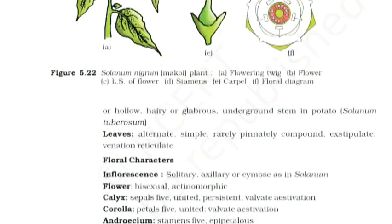Stem is hollow, hairy or glabrous; underground stem in potatoes (Solanum tuberosum). Leaves are alternate, simple, rarely pinnately compound, exstipulate, with reticulate venation. Floral characters: Inflorescence solitary, axillary, or cymose as in the Solanum family.